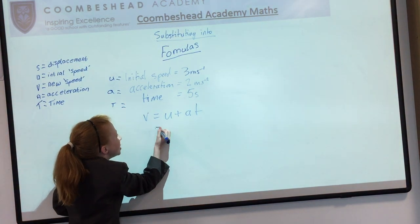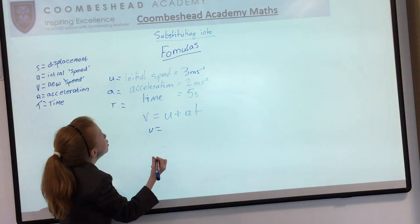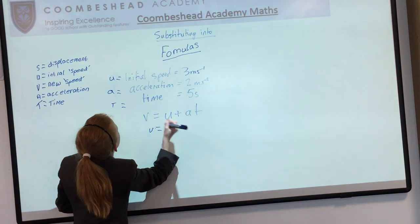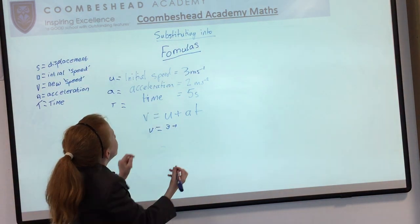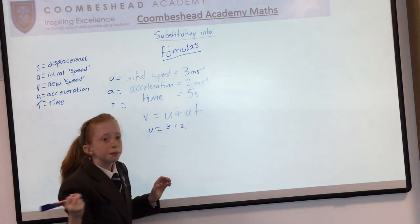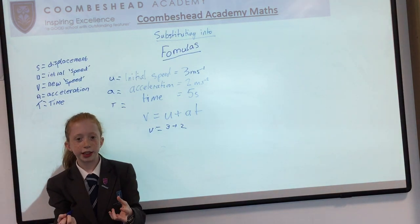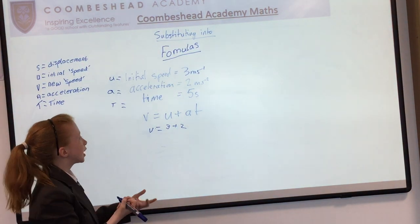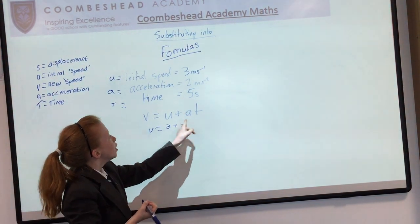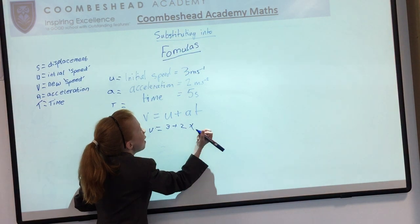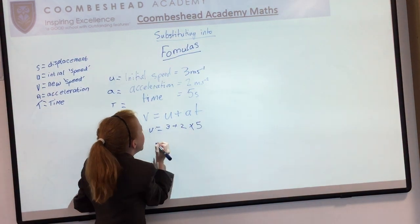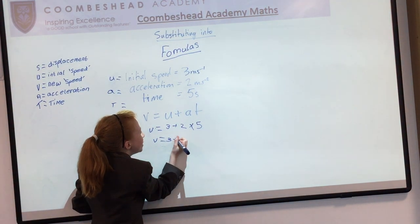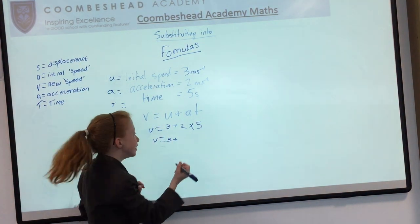So what we do is U is 3 and A which is 2. And when two numbers are next to each other in algebra or formulas they are times together. So it's 2 times 5. So we do that sum which is 3 and 2 times 5 is 10.